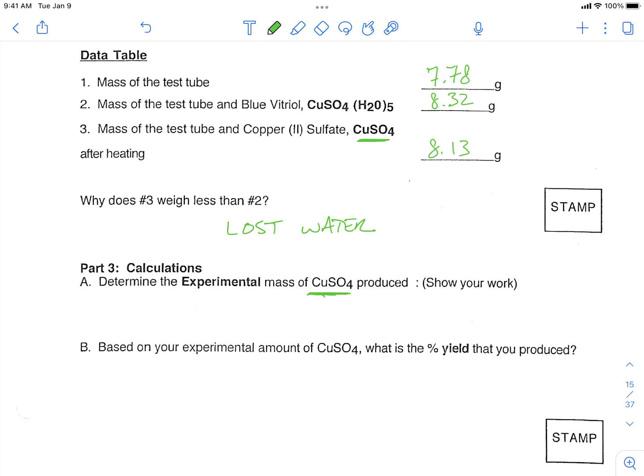So we want to know how much did we make? And so we're going to subtract number three minus number one, referring to the numbers in our data table. So we're going to take our 8.13 grams, and we're going to subtract that from our 7.78 grams.